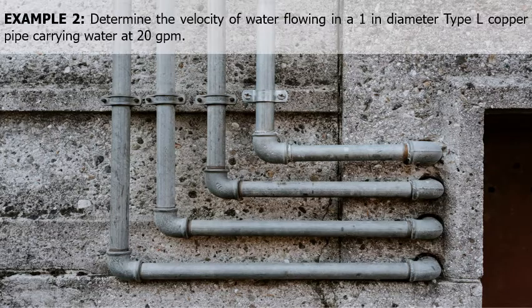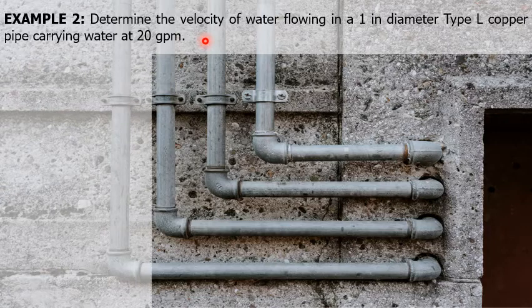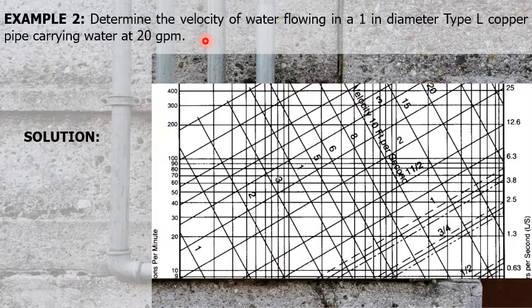Second example. Determine the velocity of water flowing in a 1-inch diameter type L copper pipe carrying water at 20 gallons per minute. This problem is similar to the previous one, except that here we're looking for velocity, whereas in the previous one we're looking for pressure drop. But still, we're going to use the same pressure drop chart, Figure 13.6. This velocity in the pressure drop chart is represented by diagonal lines slanting downward from left to right.